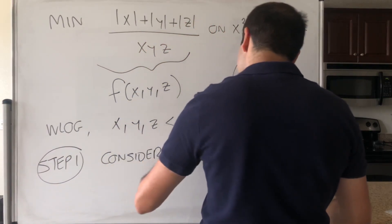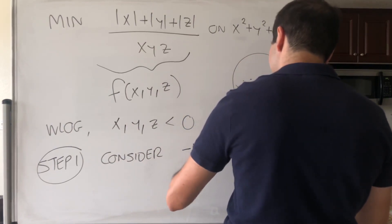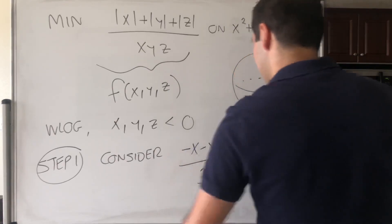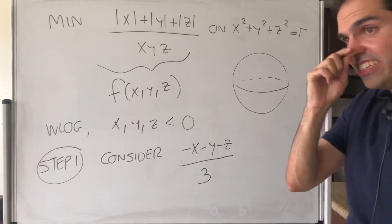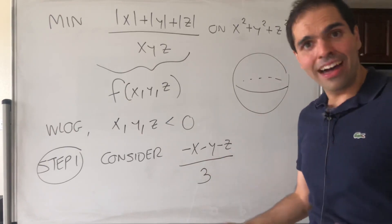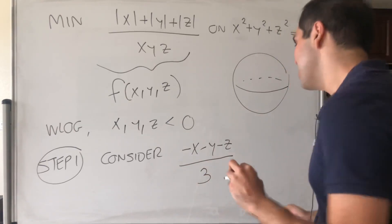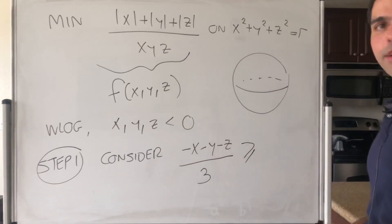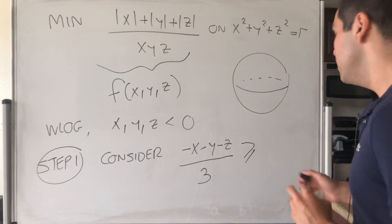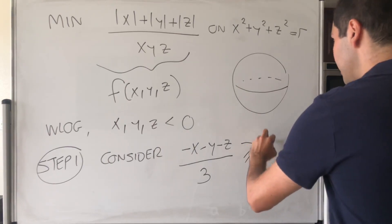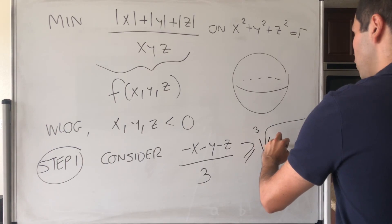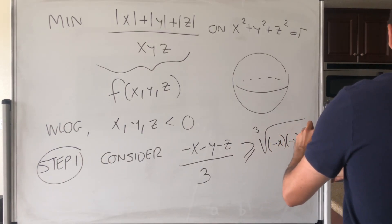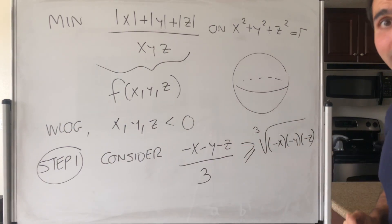But even better, let's consider the average. Why do we consider the average? Because now we can apply the arithmetic geometric mean inequality. And what it says is, that the arithmetic mean, so the average as we know it, is bigger than or equal to the geometric mean, which is the cube root of minus x minus y minus z. So that's on the one hand.